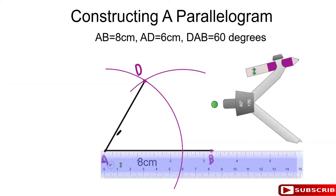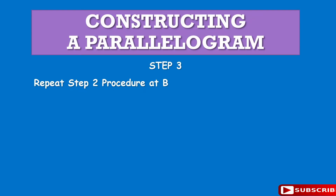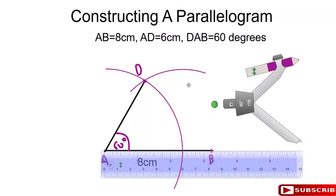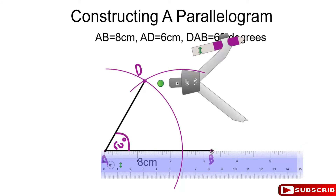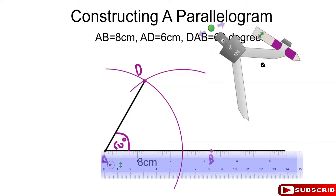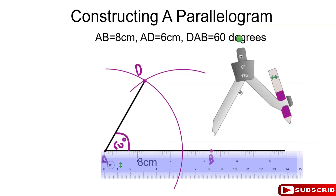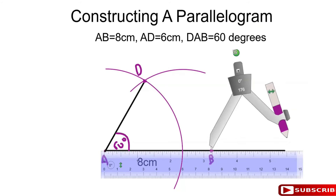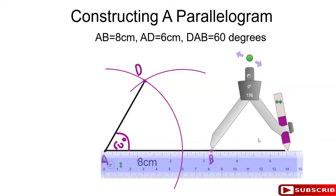Now if this angle is 60 degrees, then the next angle over at B is going to be 120 degrees, because co-interior angles sum to 180. So this angle at B is 120 degrees. To construct a 120-degree angle from B, extend the line AB a little bit, then construct a 60-degree angle at B — make sure your compass is set to 6 cm and extend line AB.